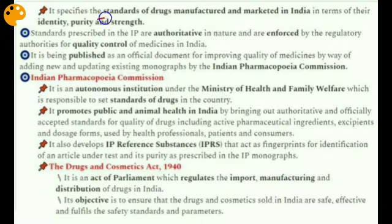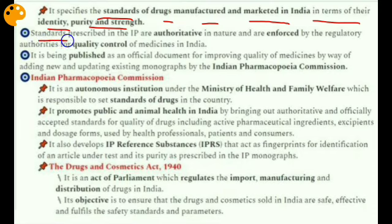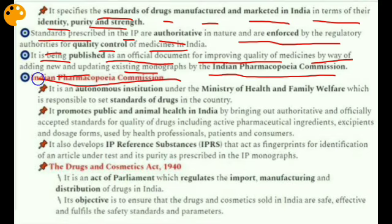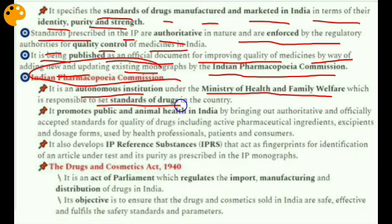The Indian Pharmacopoeia specifies the standards of drugs manufactured and marketed in India in terms of their identity, purity, and strength. These standards are authoritative and enforced by regulatory authorities for quality control of medicines. It is published as an official document by the Indian Pharmacopoeia Commission, an autonomous institution under the Ministry of Health and Family Welfare, responsible for setting drug standards in the country.